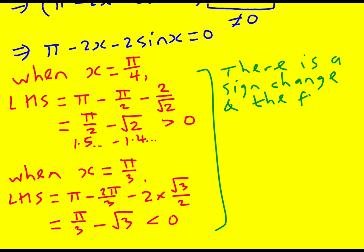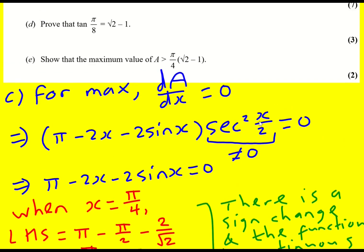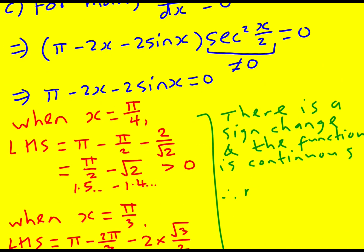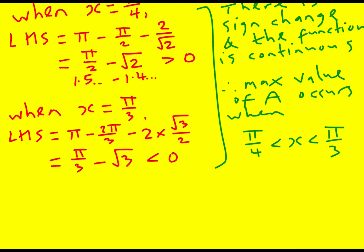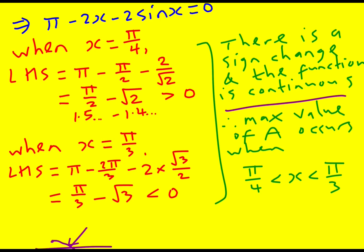So there is a sign change. And the function is continuous. Therefore, the max value occurs. I'm assuming that you're familiar with the sign change rule. I'm going to maybe say one little thing. So we had that for π over 4, it was positive. And then for π over 3, it was negative. Now, because it's continuous, it must at some point go through zero. And so it must be between these two values. And that's essentially what the sign change rule is saying. It's got to be between these two values.